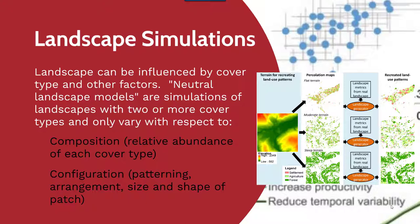The landscape can be influenced by cover type and other factors. Neutral landscape models are simulations of the landscape with only two or more cover types present, including only elements of the composition — the relative abundance of each cover type — and configuration — the patterning, arrangement, size, and shape of the patch. In this figure to the right, you can see various ways in which you can construct or work with the composition and configuration.